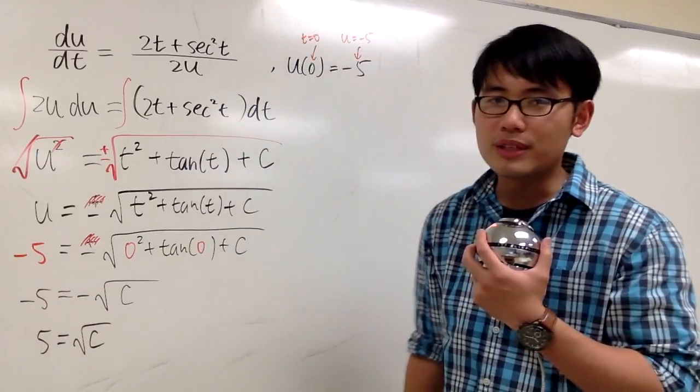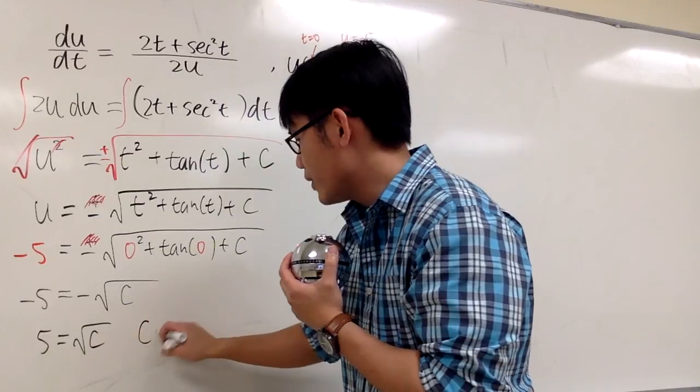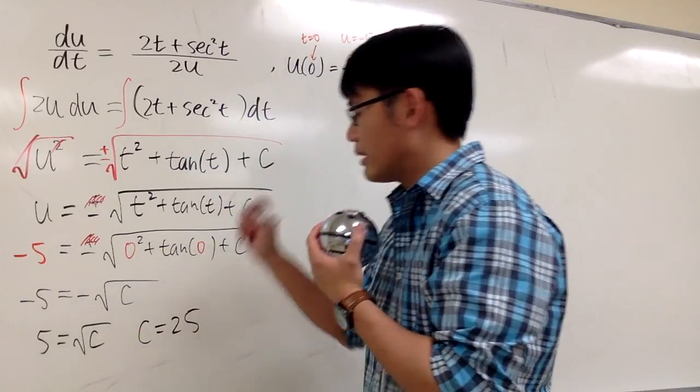And we can square both sides, we get c equals positive 25.